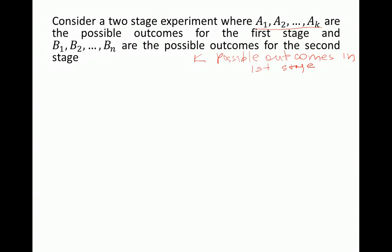And for the second stage we have n possible outcomes: b1, b2, ..., bn. So n possible outcomes in the second stage.